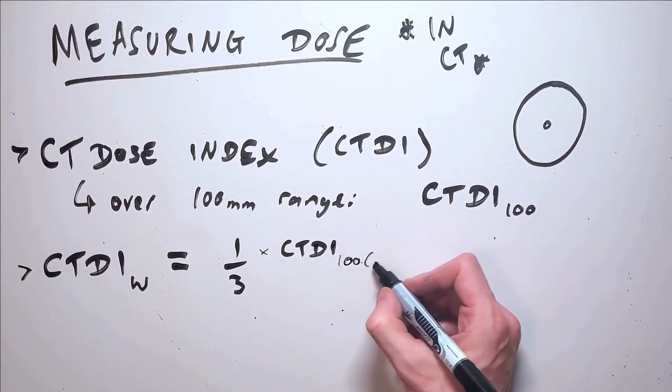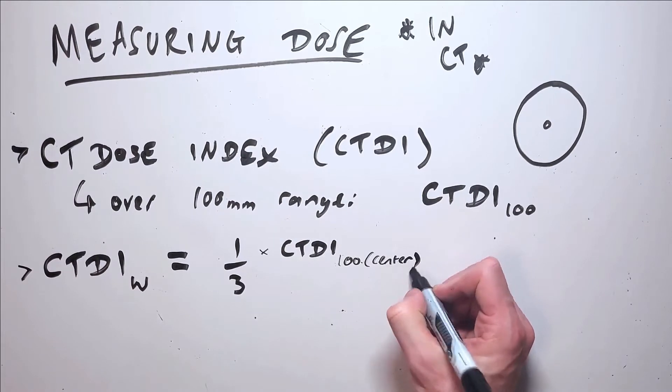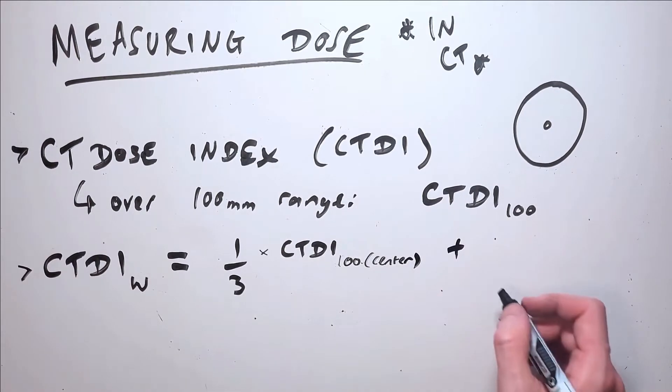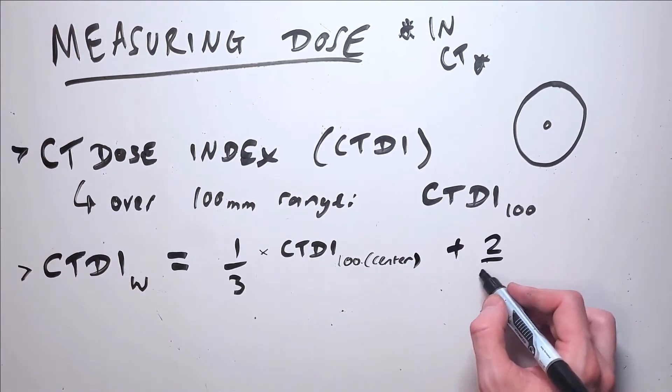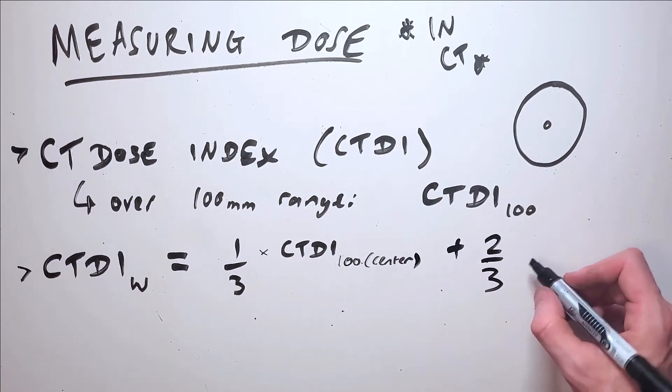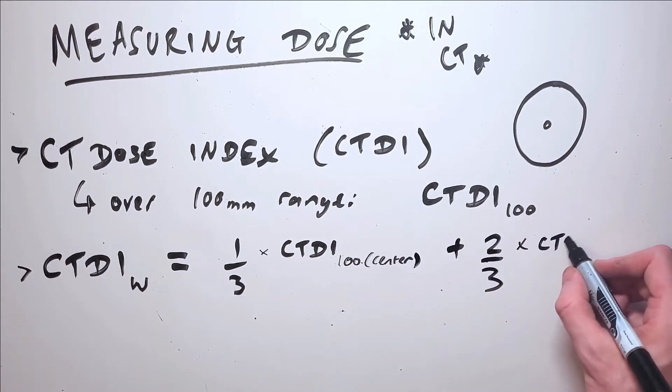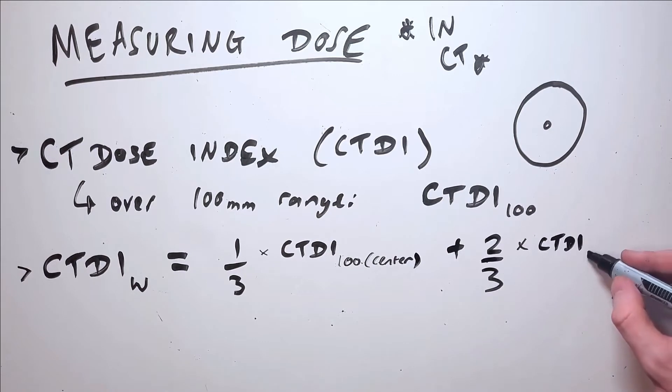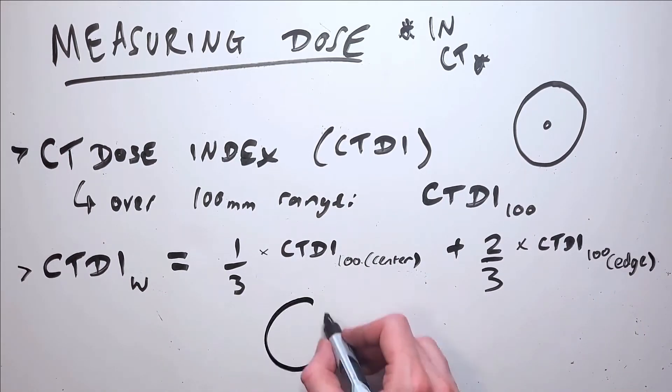The weighted CTDI is a measurement that takes this into account by using dose measurements both at the center and the periphery of the phantom, and then weighting the central measurement at one-third times the CTDI 100 and weighting the peripheral measurement at two-thirds times the CTDI 100, adding those two to give us the weighted CTDI.